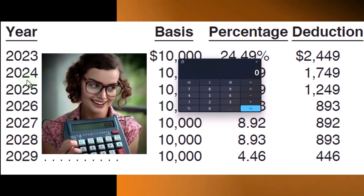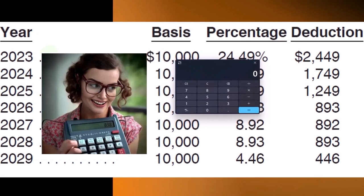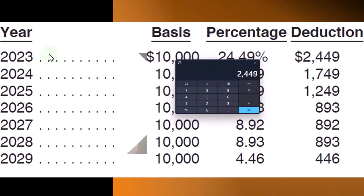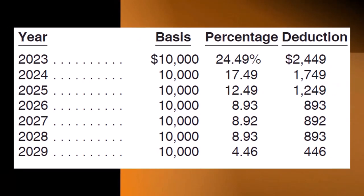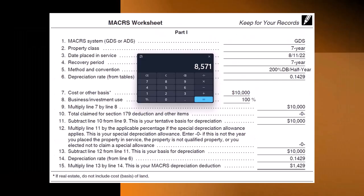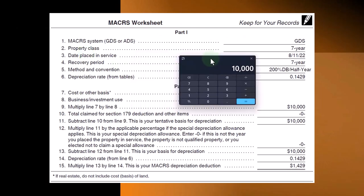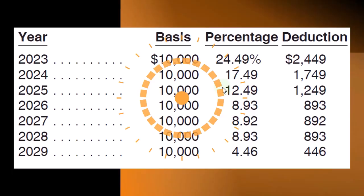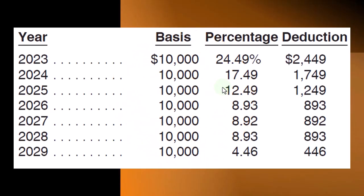If I add up the depreciation over years 1 through 7 — the 2,449 plus 1,749 plus 1,249 plus 893 plus 892 plus 893 plus 446 equals 8,571, and then add the 1,429, it adds up to $10,000. So we've fully depreciated the asset after that point.